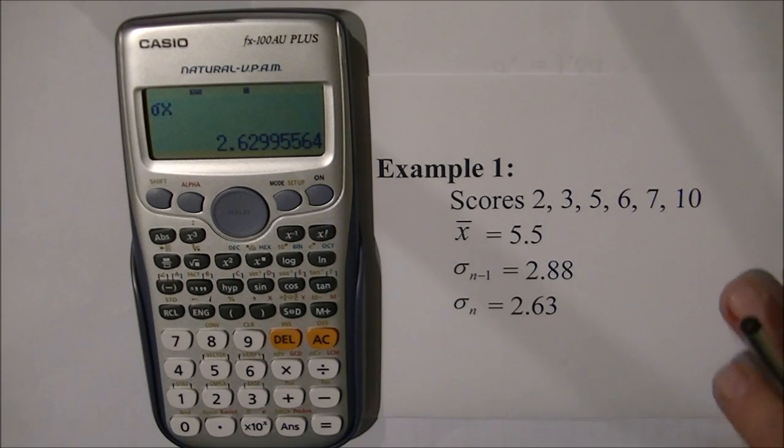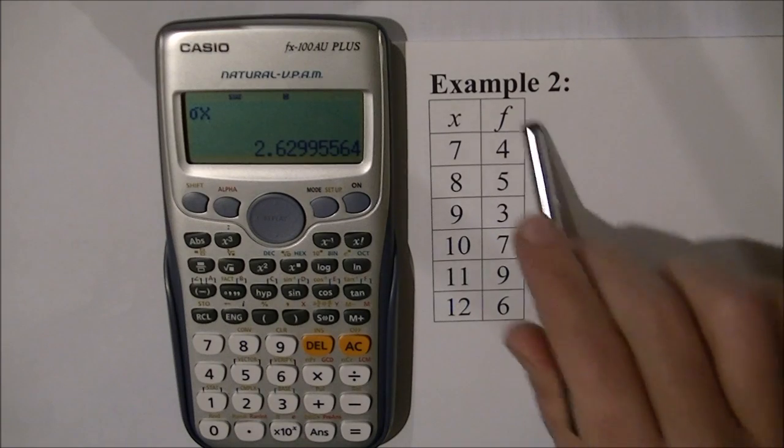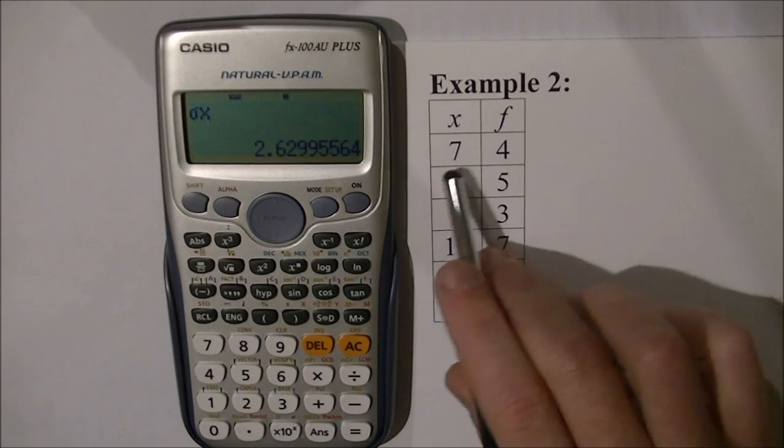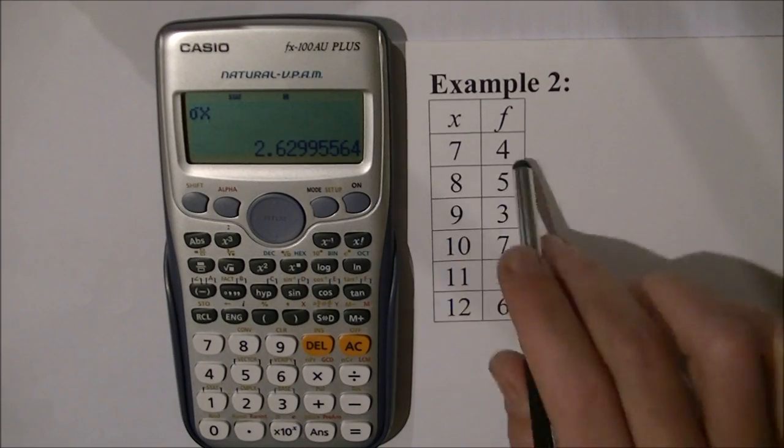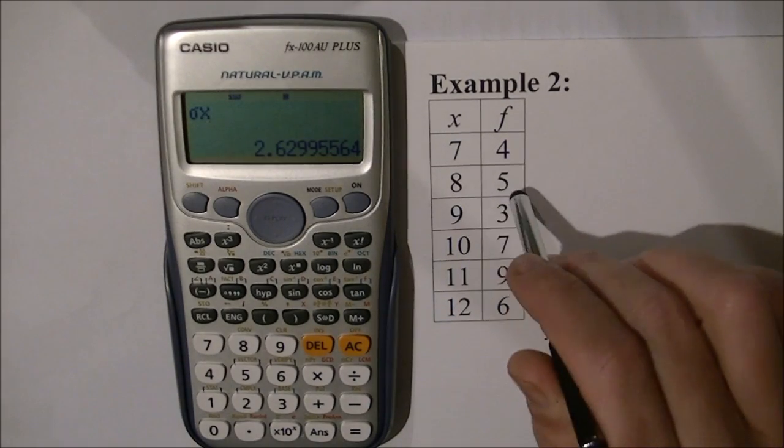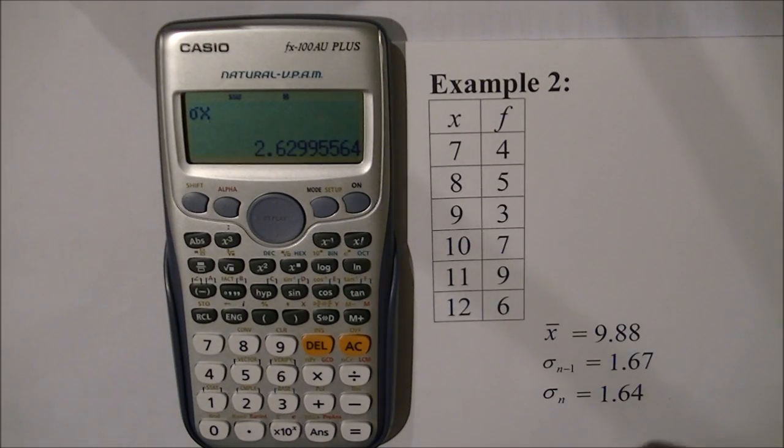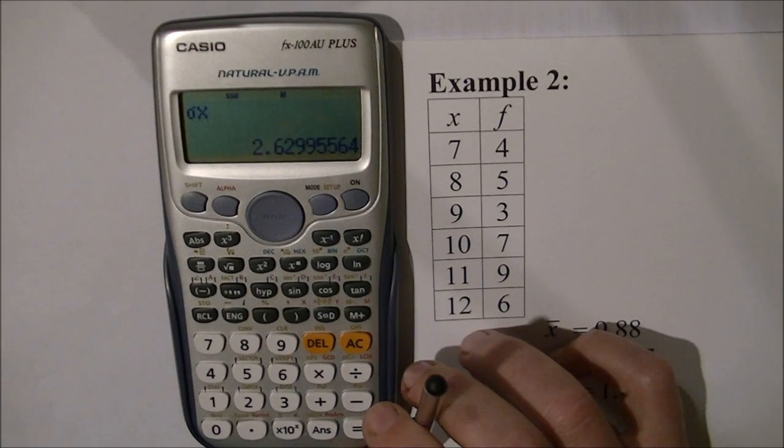The next example shows how to enter scores when you have a frequency distribution table with multiple sets of the same number. Instead of entering 7 four times, 8 five times, 9 three times, and so on, there's a more efficient way to enter these scores.